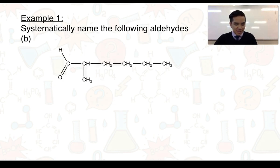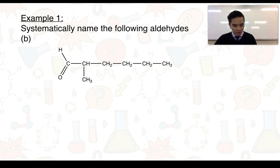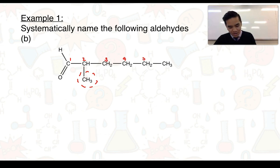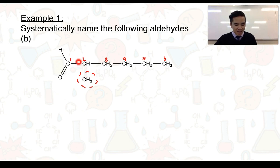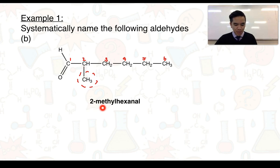Our next example is also an aldehyde. We establish the longest chain of carbon atoms, including the carbonyl carbon, and count six. We also identify a side group — a methyl group. Numbering the carbons so that the functional group has the smallest number, the carbonyl is carbon 1. We have a methyl group on carbon 2 and six carbon atoms in the main chain, making it a hexanal. The full name is 2-methylhexanal.